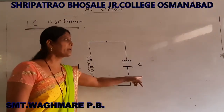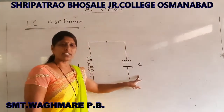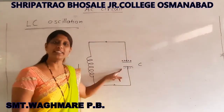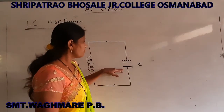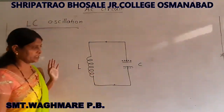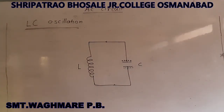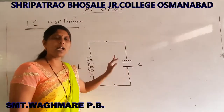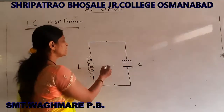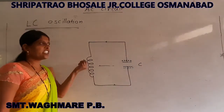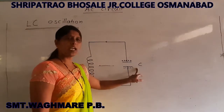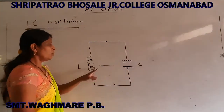Due to the energy in the inductor, the inductor will start to charge the capacitor again. Current flows and the capacitor charges. Due to this charging, the polarity of the plates changes — the negative plate becomes positive and the positive plate becomes negative. This process repeats, and the charging and discharging of the capacitor continues. Energy keeps oscillating. First, energy in the capacitor decreases and is transferred to the inductor, but the polarity is in a different direction.